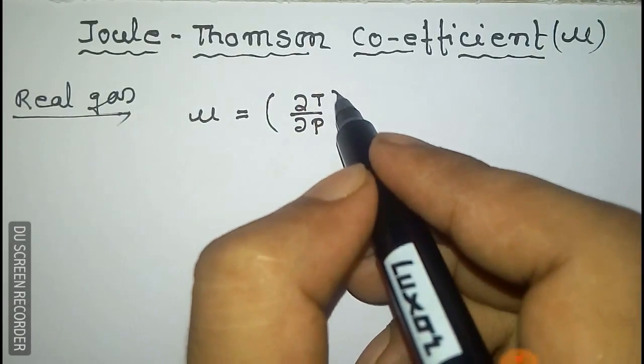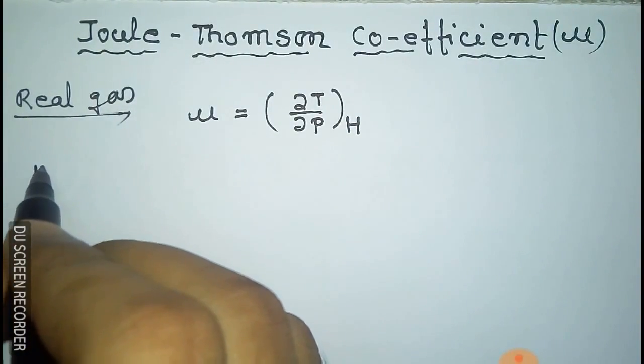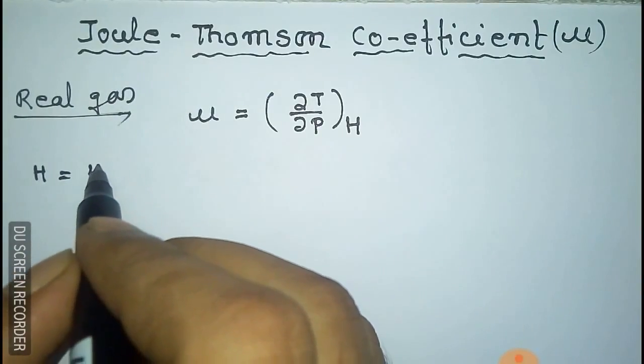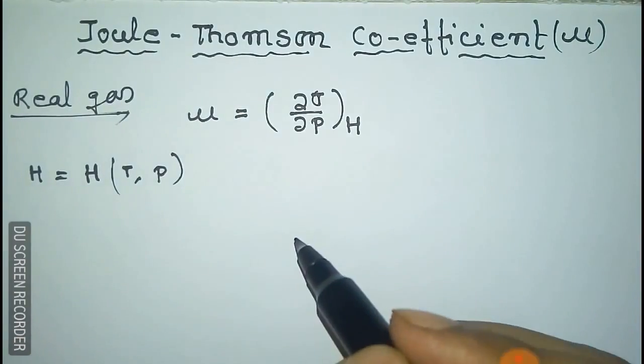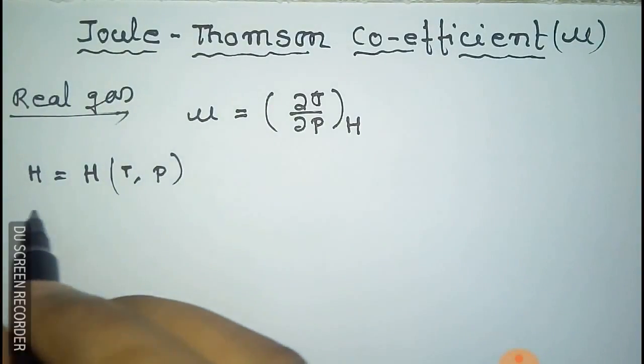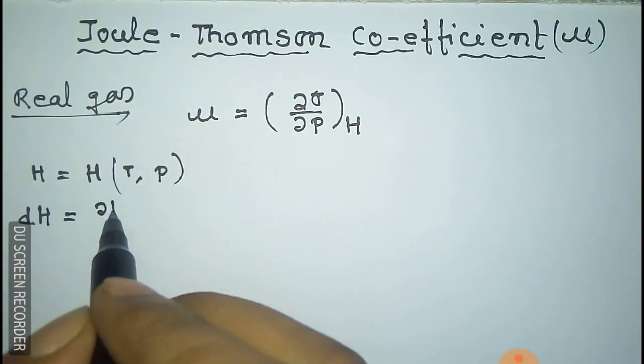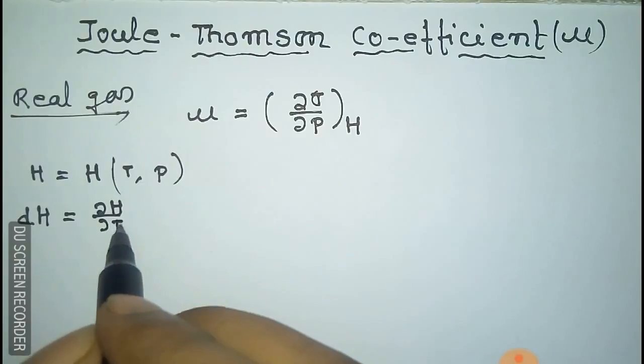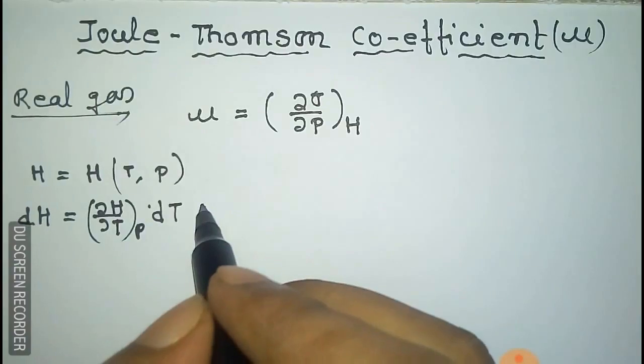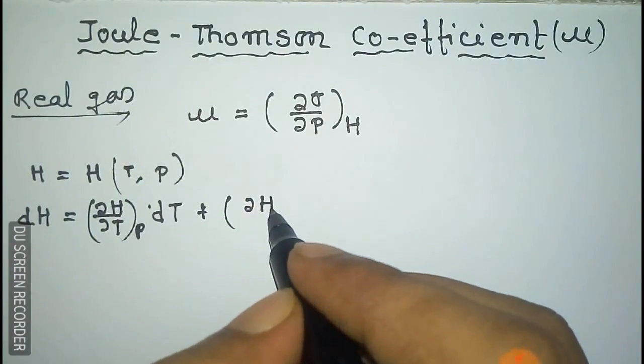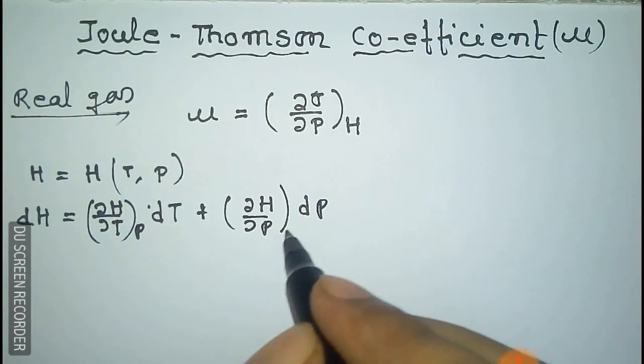Here H is the function of temperature and pressure, so we can write dH as del H del T at constant pressure into dT plus del H del P at constant temperature into dP.